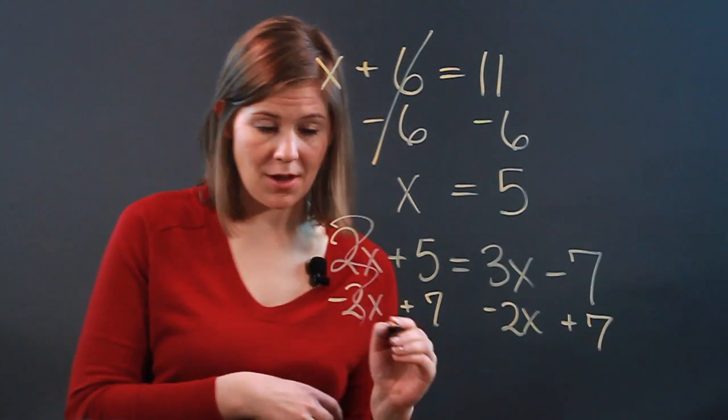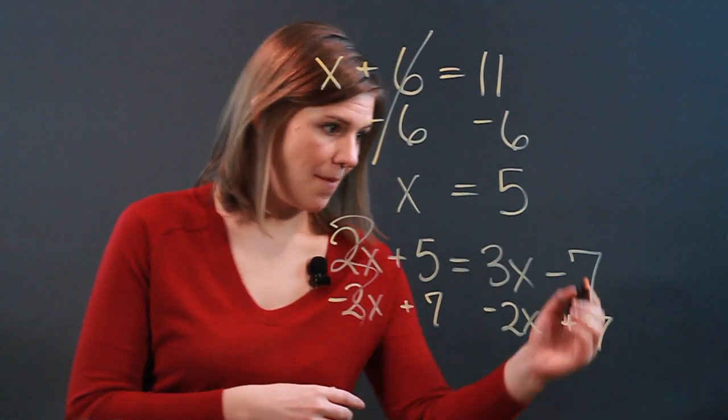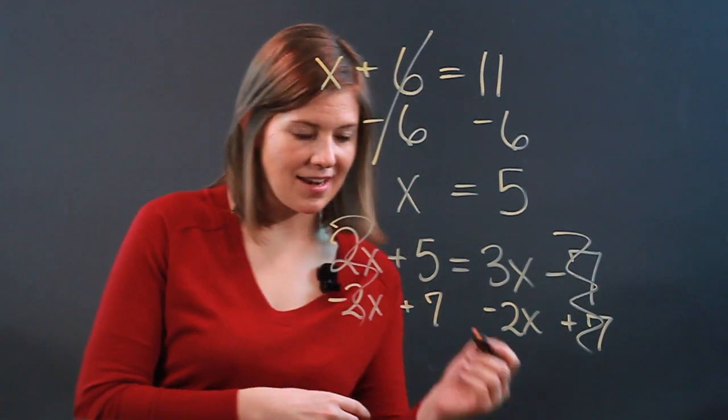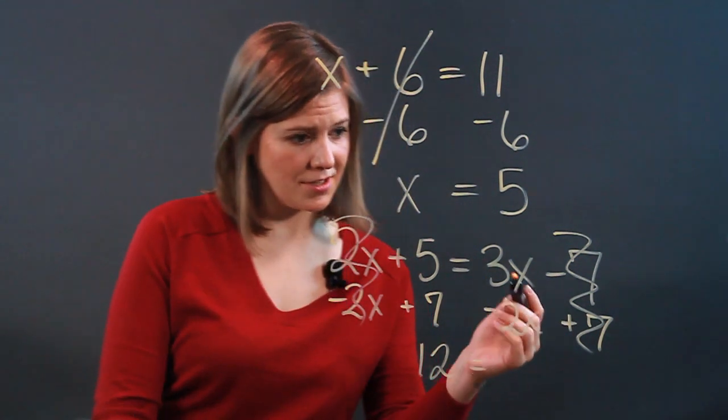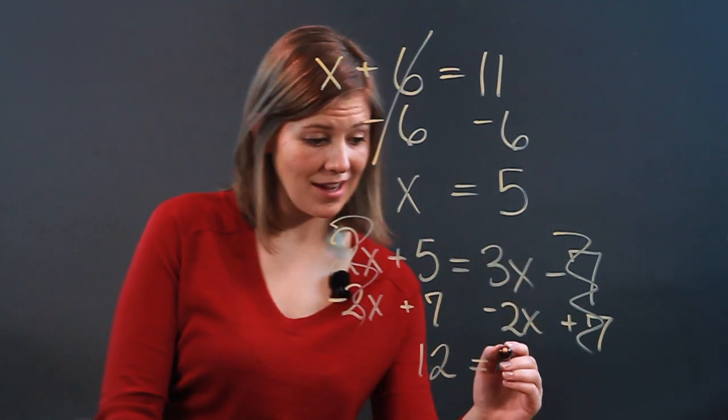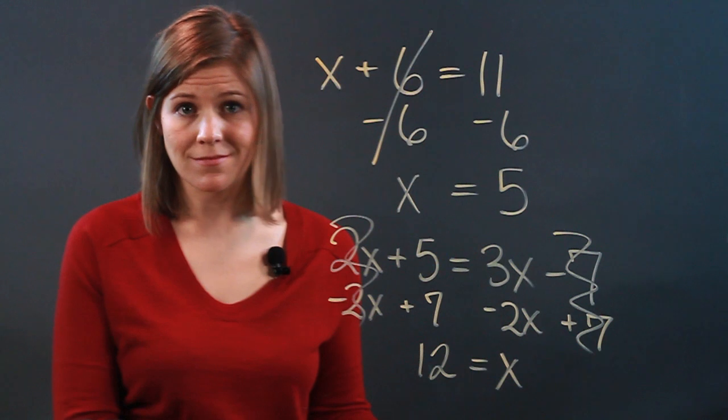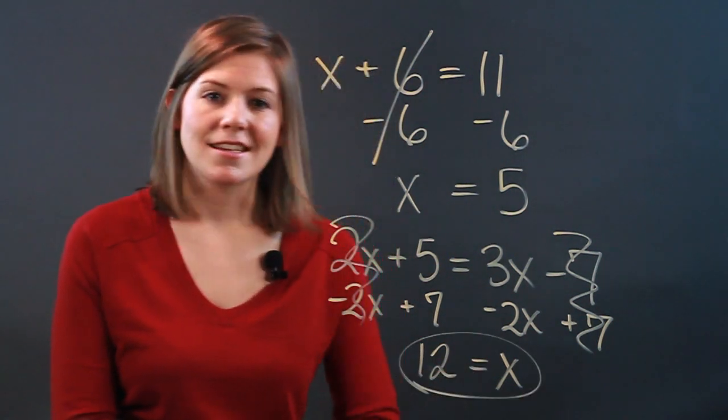That done, my 2x's go away, my negative 7 goes away, and now I have 5 plus 7, which gets me 12, and that's going to be equal to, well, 3x minus 2x is x. So here I've solved it. x equals 12.